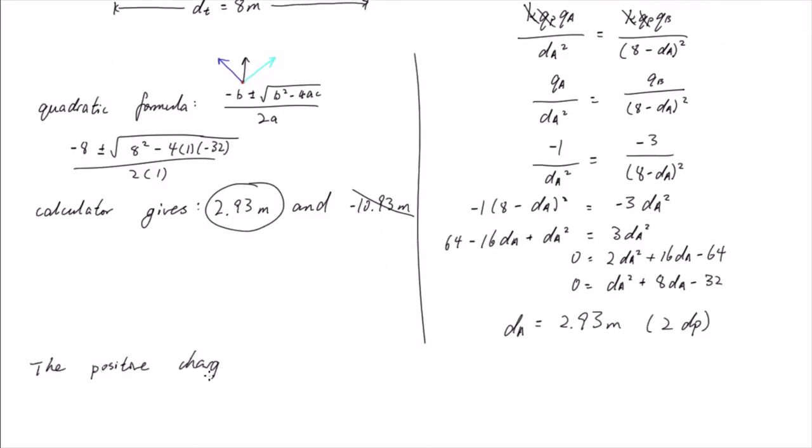Therefore, the positive charge must be located 2.93 meters to the right of particle A for it to remain stationary.